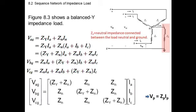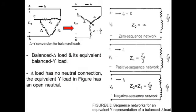Then we discussed about a matrix relating the phase voltages, the phase impedances, and the phase currents. Later on in the same lecture, we discussed how to convert a delta into a star connected load, and how to find the zero sequence component, the positive sequence component, and the negative sequence component. We also solved a problem related to calculating the zero sequence component, the positive sequence network, and the negative sequence network.